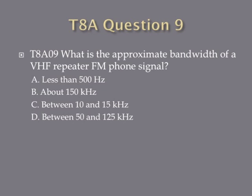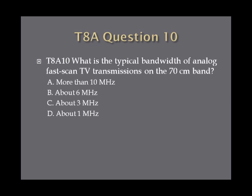Question 9: What is the approximate bandwidth of a VHF repeater FM phone signal? A. Less than 500 hertz. B. About 150 kilohertz. C. Between 10 and 15 kilohertz. Or D. Between 50 and 125 kilohertz. Question 10: What is the typical bandwidth of analog fast scan TV transmissions on the 70 centimeter band? A. More than 10 megahertz. B. About 6 megahertz. C. About 3 megahertz. Or D. About 1 megahertz.